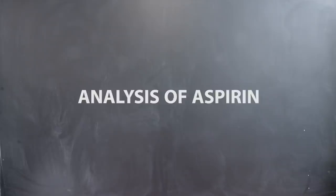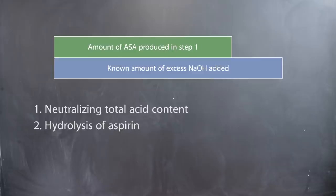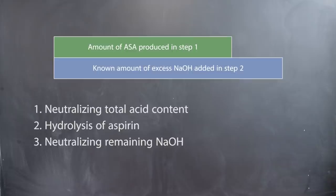Analysis of aspirin: In this experiment, you will be titrating aspirin tablets with a standardized sodium hydroxide solution to neutralize the acetylsalicylic acid and any potential acid impurities. Then you will add a known amount of excess base to hydrolyze the acetylsalicylate produced from the reaction of ASA and sodium hydroxide in step one.